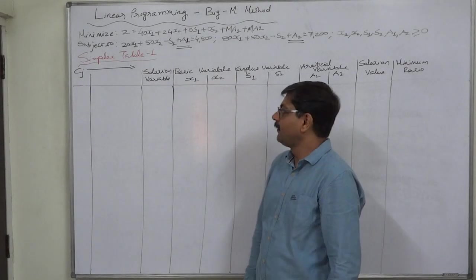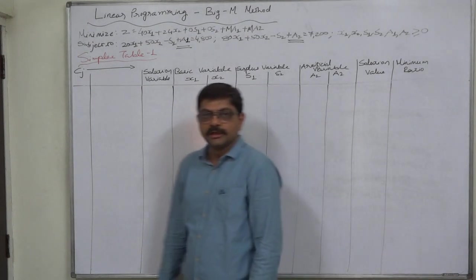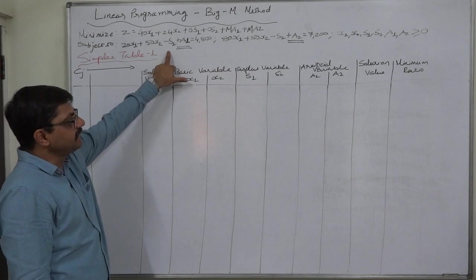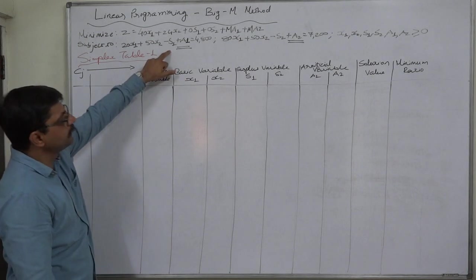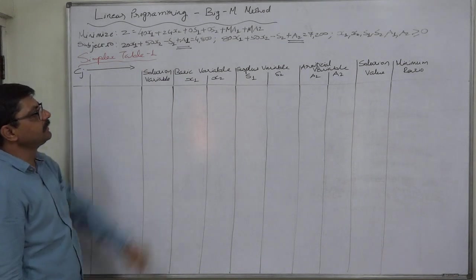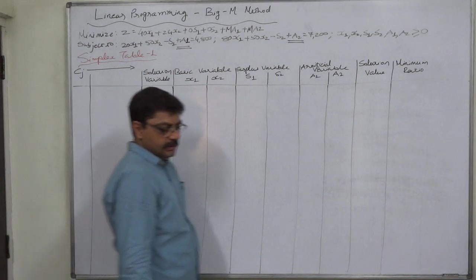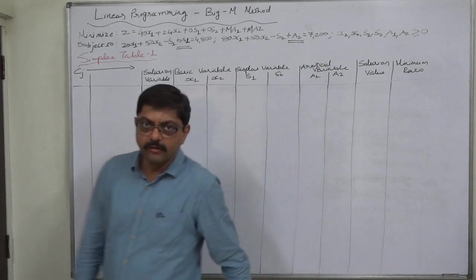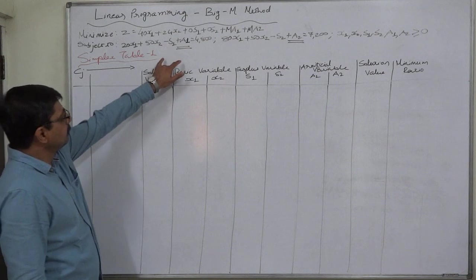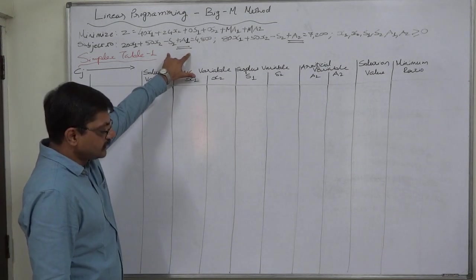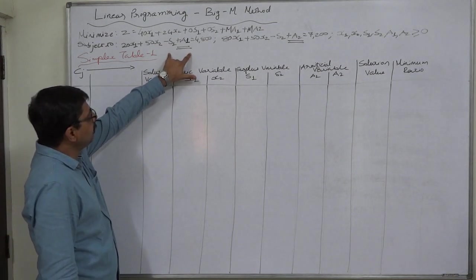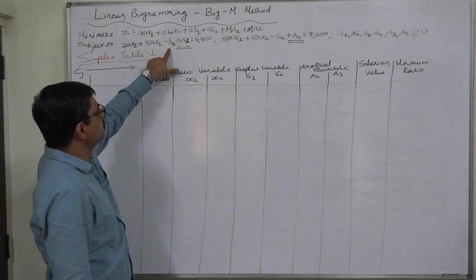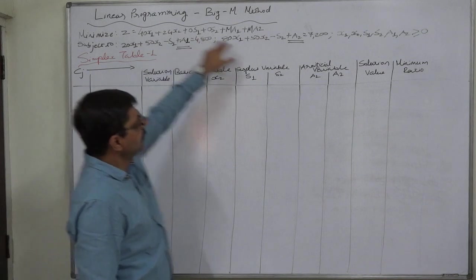Hello friends, welcome. We are going to start with simplex table 1 to solve this linear programming problem. We are going to use the Big M method because there are two inequalities with greater than or equal to sign. Converting these inequalities into equalities, we have to introduce two types of variables: we subtract a surplus variable and add an artificial variable.